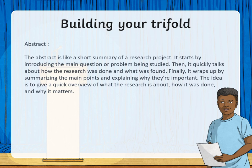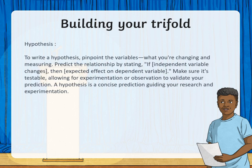We are going to be moving to building your trifold after you guys are done with your modeling process. Firstly, we are going to start with the abstract. The abstract is like a short summary of a research project. It starts by introducing the main question or problem being studied, then quickly talks about how the research was done and what was found. Finally, it wraps up by summarizing the main points and explaining why they are important. The idea is to give a quick overview of what the research is about, how it was done, and why it matters.